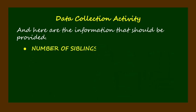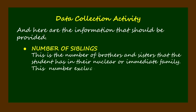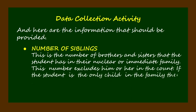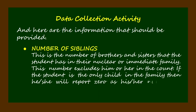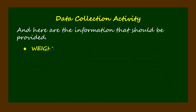Number of siblings — this is the number of brothers and sisters that the student has in their nuclear or immediate family. This number excludes him or her in the count. If the student is the only child in the family, then he or she will report zero as his or her number of siblings.